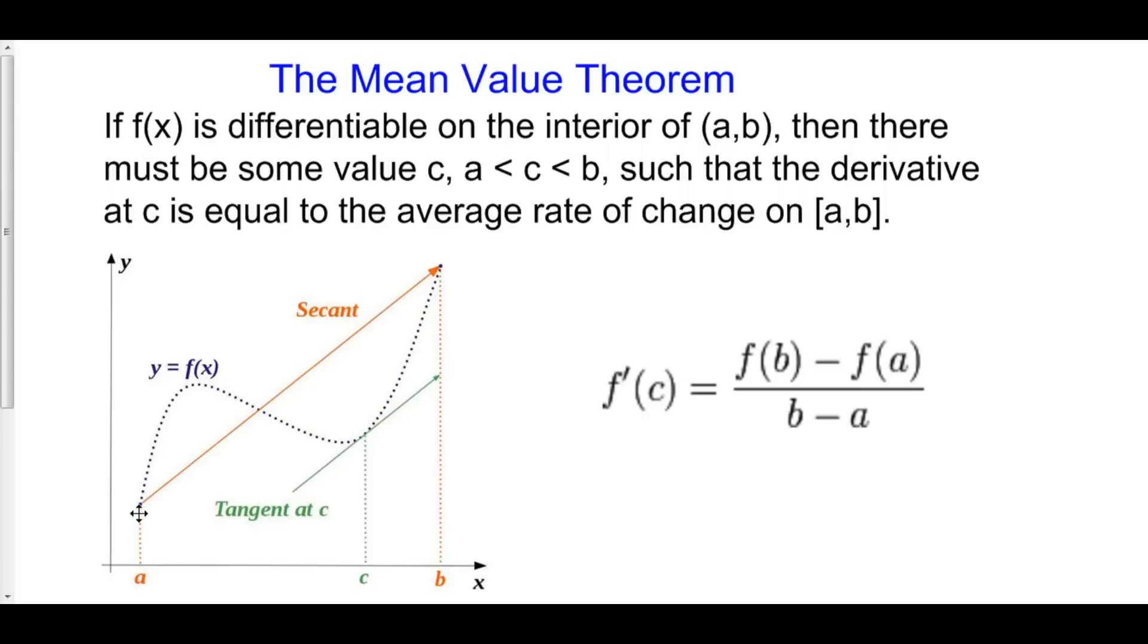Now, if you look at the average rate of change from a to b, what you're doing is finding a secant line. The average rate of change on [a,b] is the slope of the line from (a, f(a)) to (b, f(b)), this orange line right here.